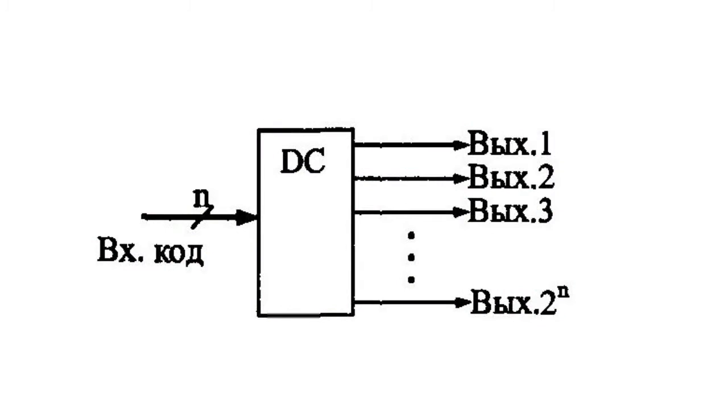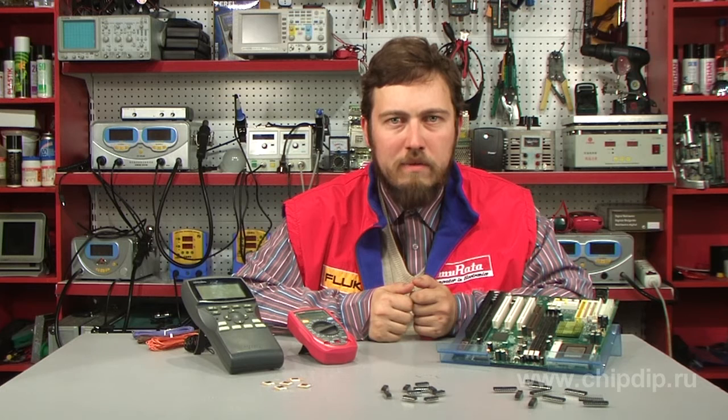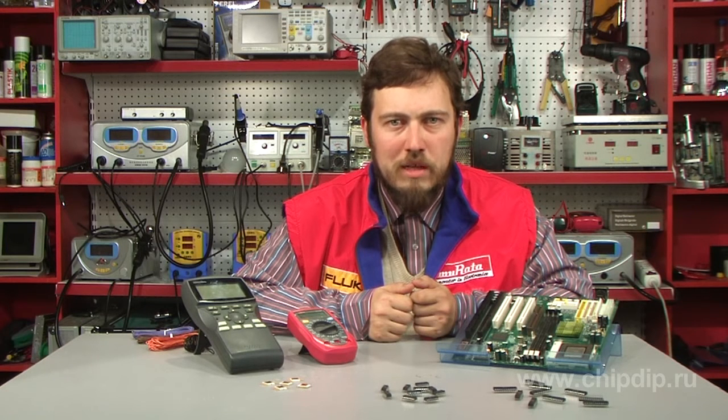Decoder chips are marked as DC in diagrams. The decoder has only one active output. The number of its output and respective signal is definitely determined by the input code.